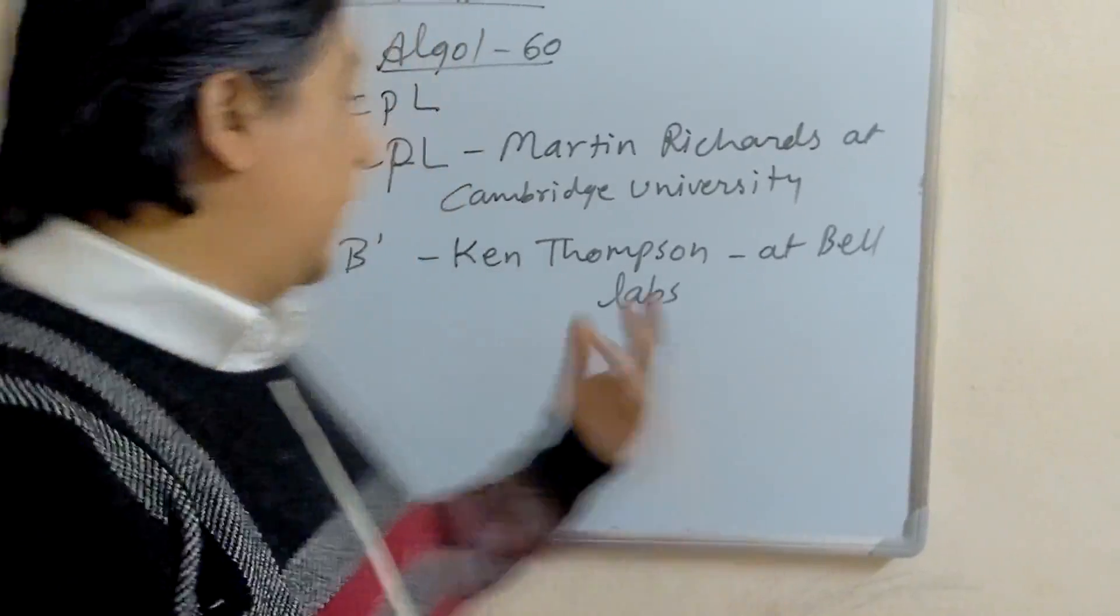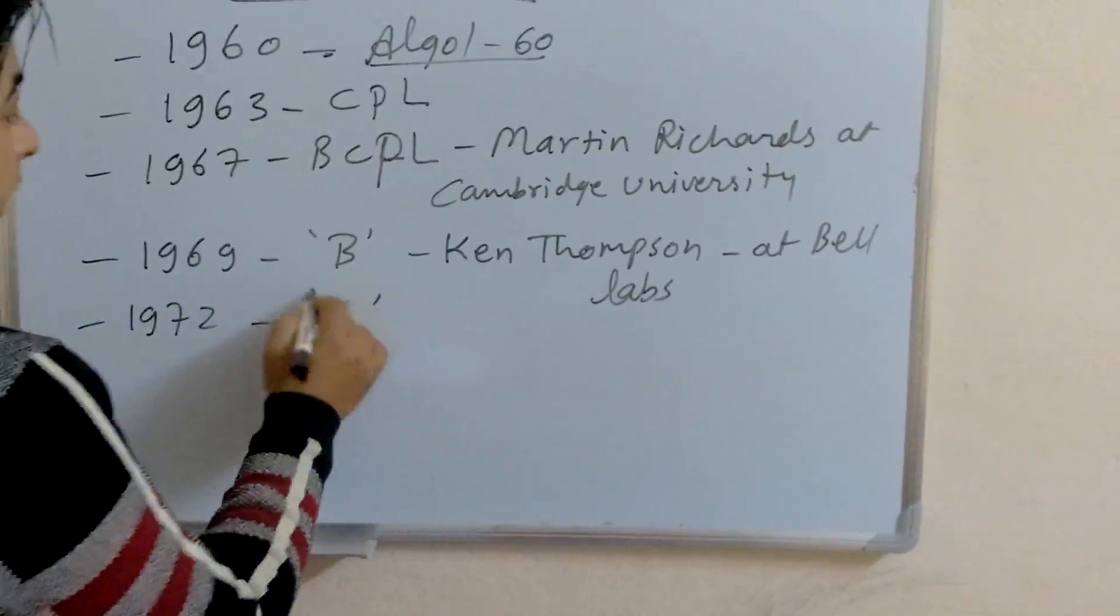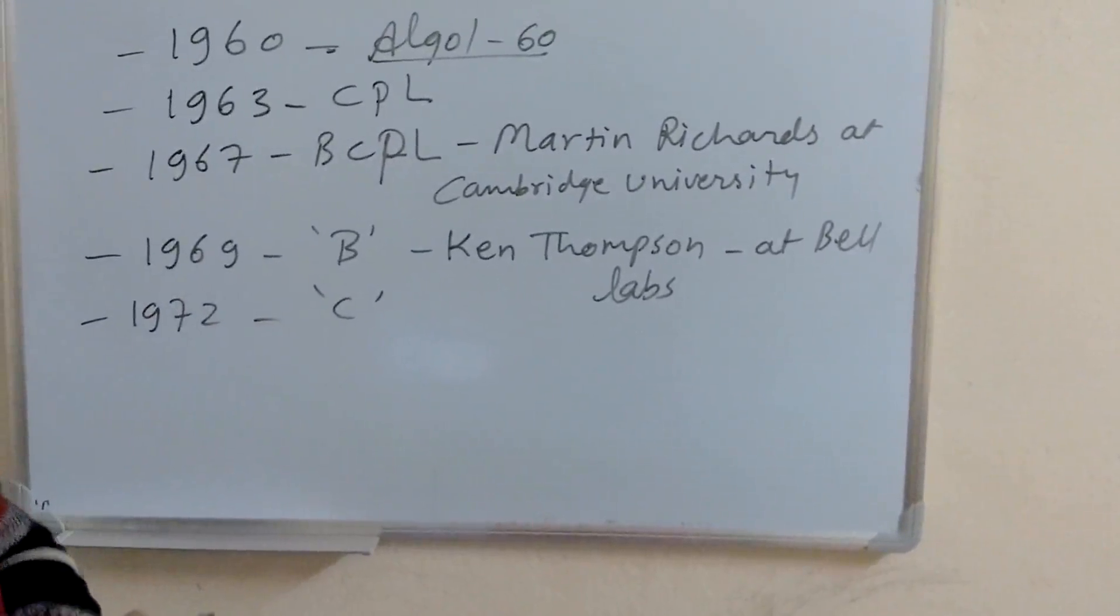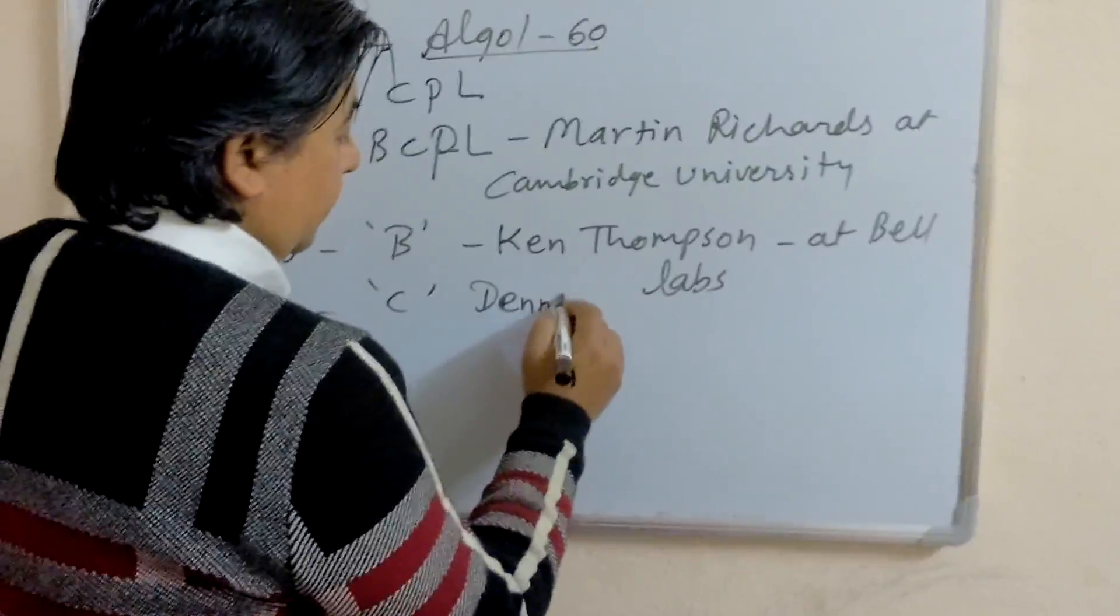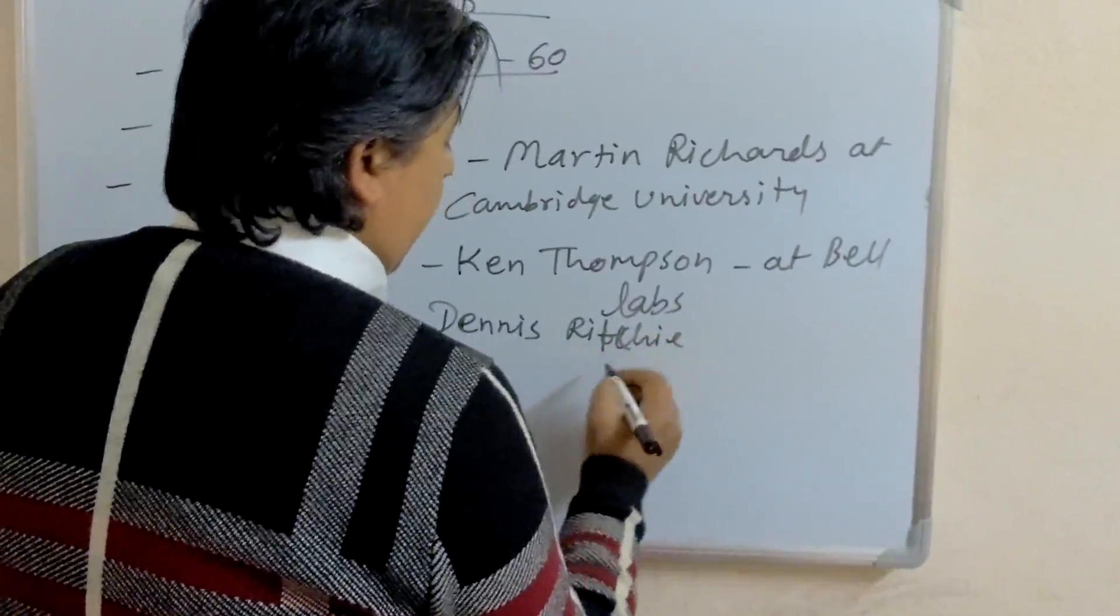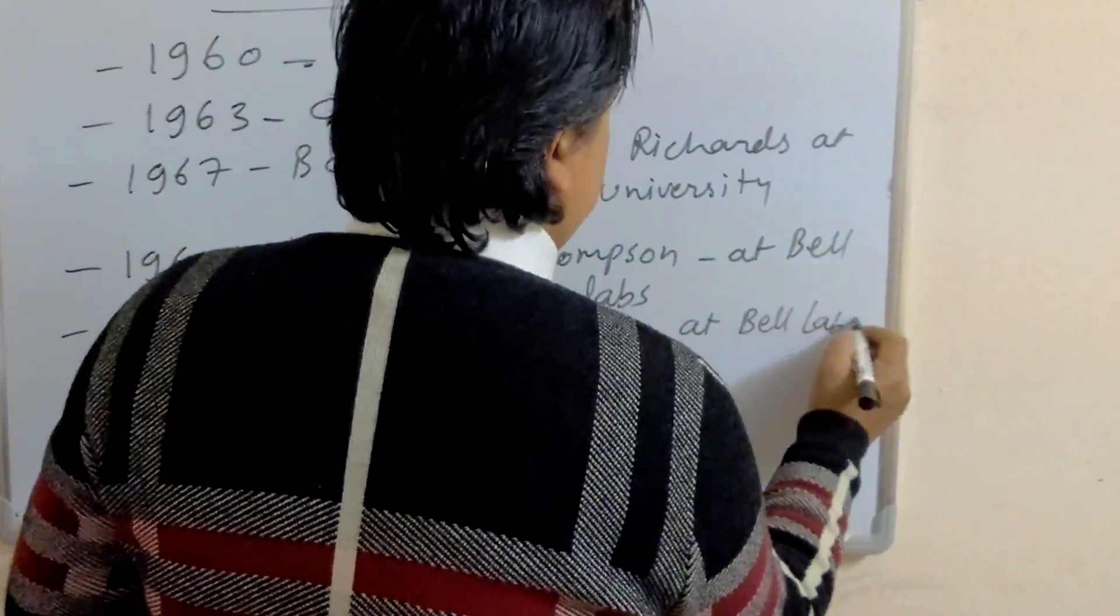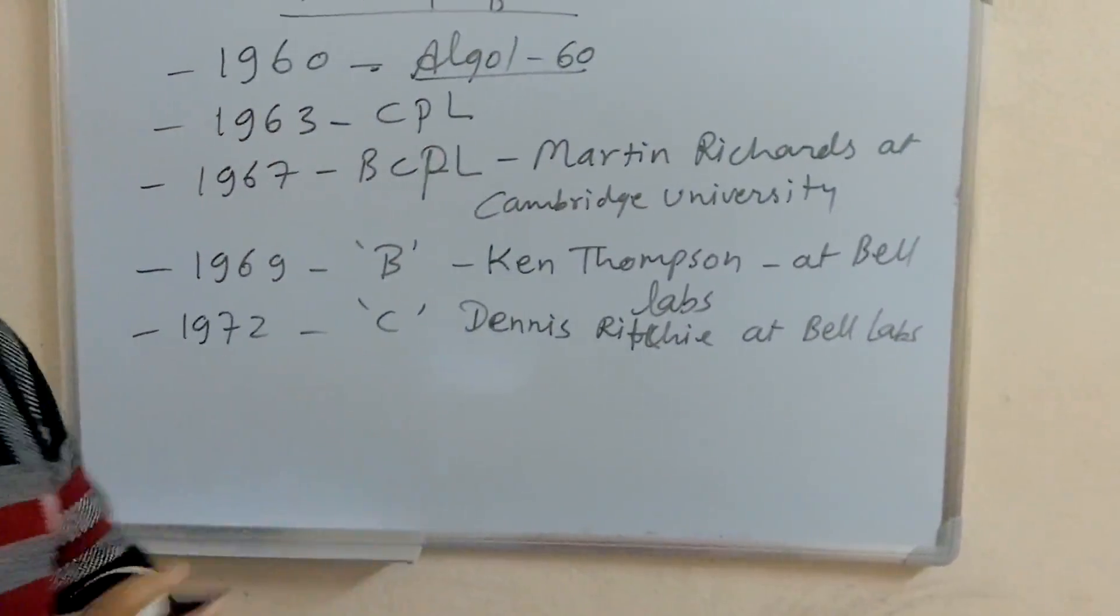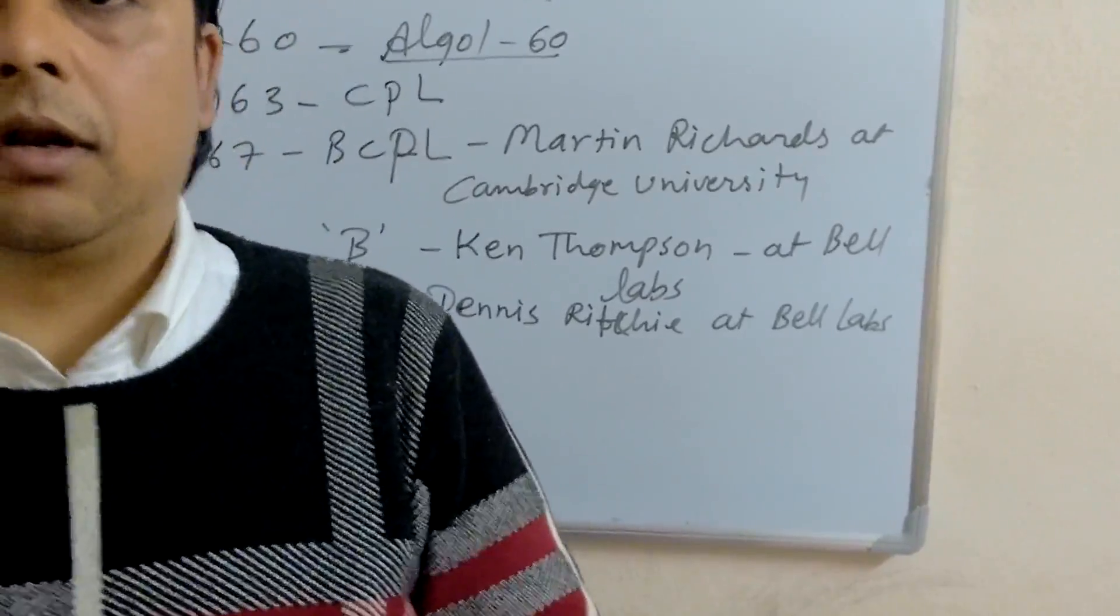That's why, in 1972, C program was developed by Dennis Ritchie at Bell Labs, which is known as the powerful high-level language.